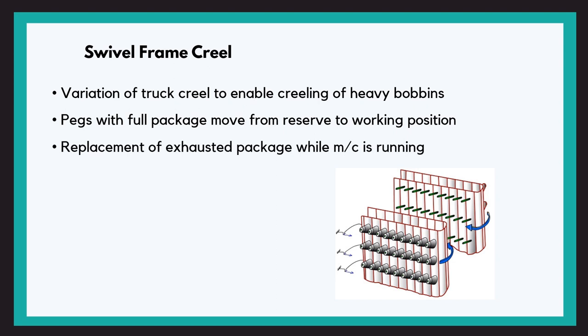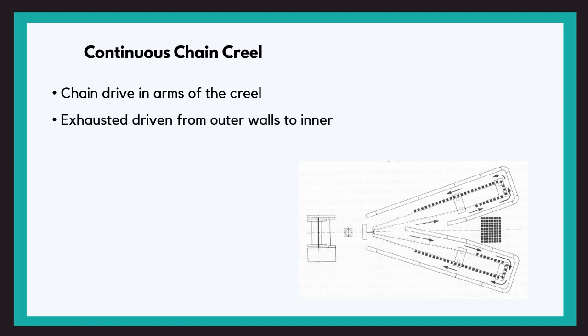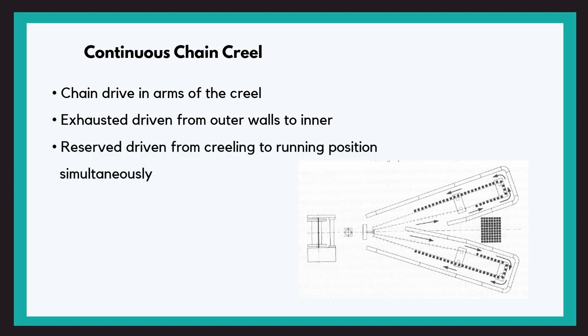The operator replaces the exhausted packages with full packages while the machine is still running. In the continuous chain creel, the frame of pegs that carry the exhausted cones is moved by a chain drive away from the outer walls of the arms of the V to its inside position, while the reserve framework with full cones is driven simultaneously from the reserve position to the working position.